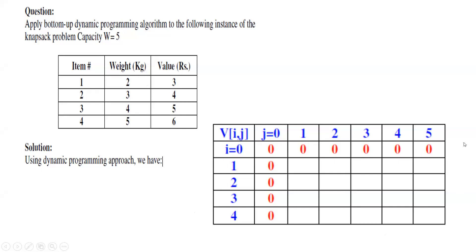Using the dynamic programming approach, we set up the initial matrix. How many columns? Capacity plus one, so six columns — the extra column is for the zero column. How many rows? Four items plus one, giving five rows — rows zero through four. So we create a five-row by six-column matrix and initialize the zero row and zero column with all zeros.